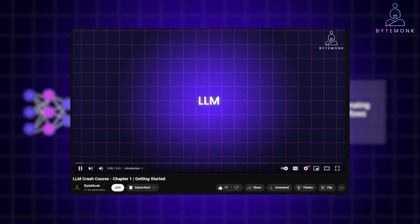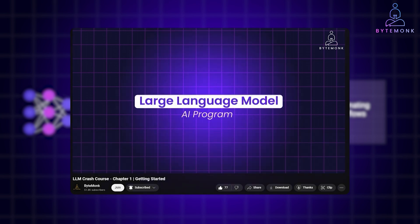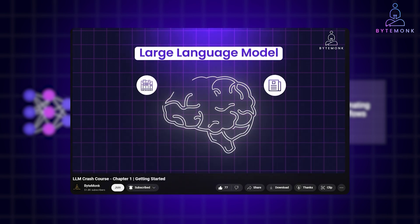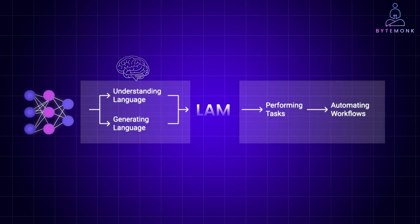If you have seen my previous videos on machine learning or LLMs, then you already have a solid foundation. Think of LAMs as AI with both brains and hands. They don't just answer questions — they understand instructions and act on them, from checking off tasks on your to-do list to actually getting things done.